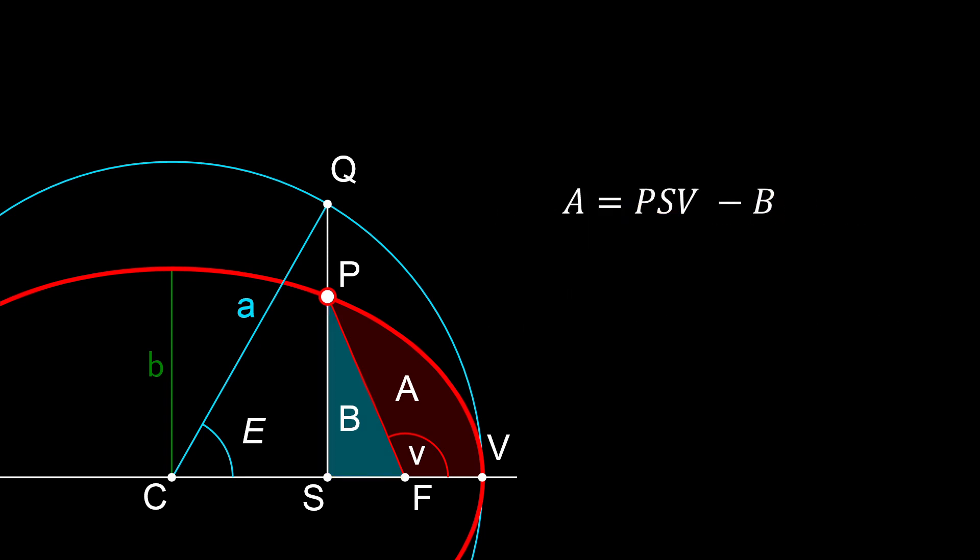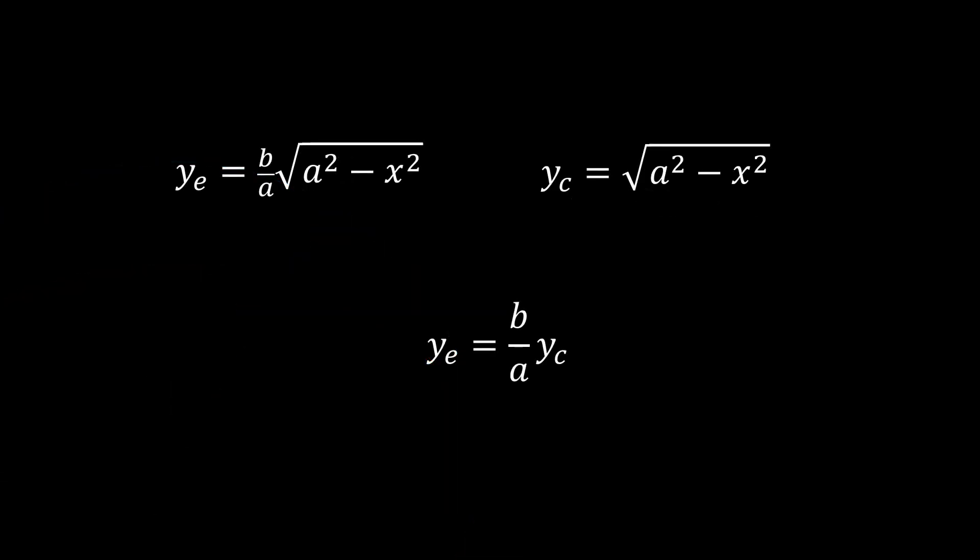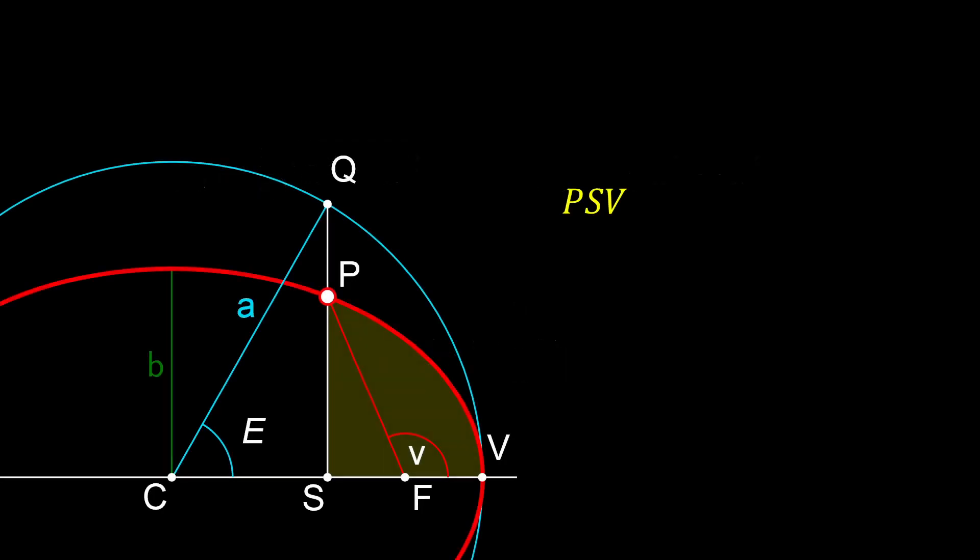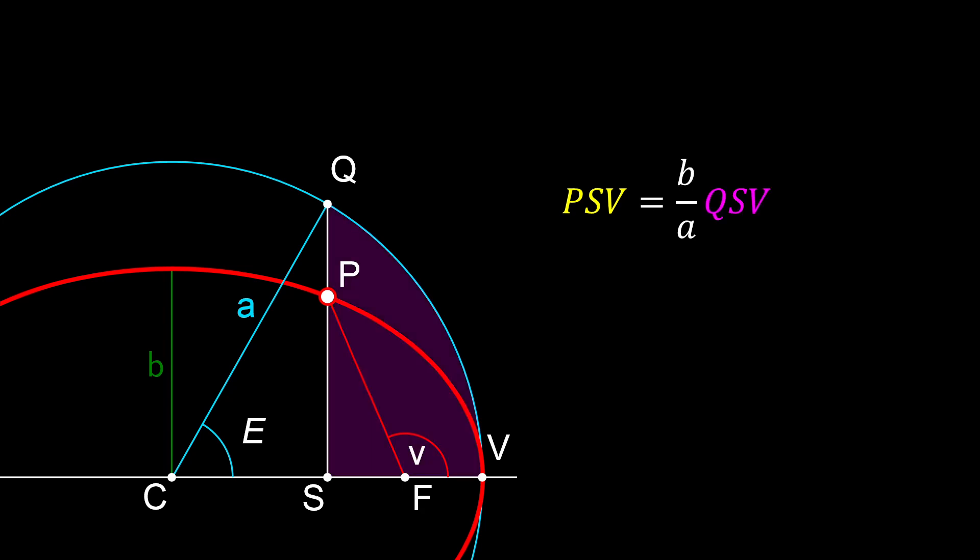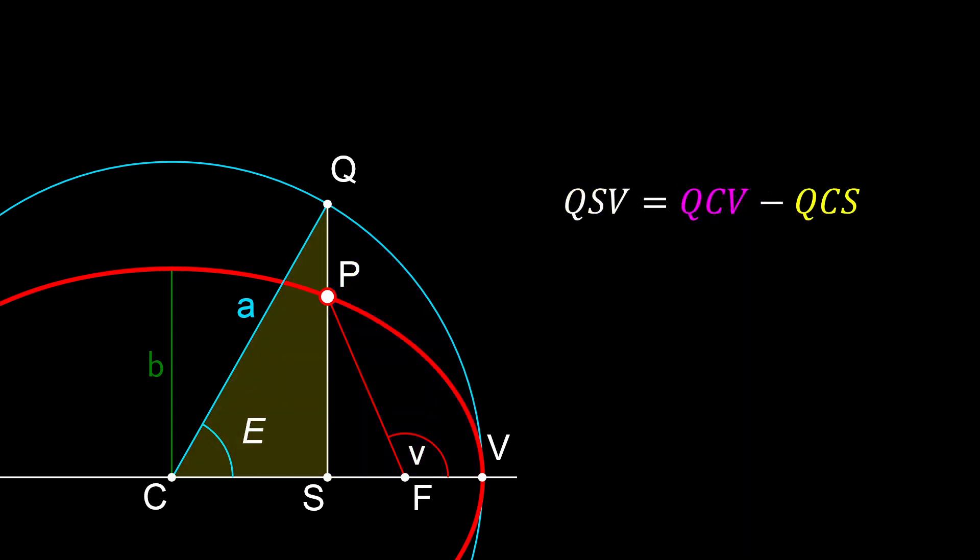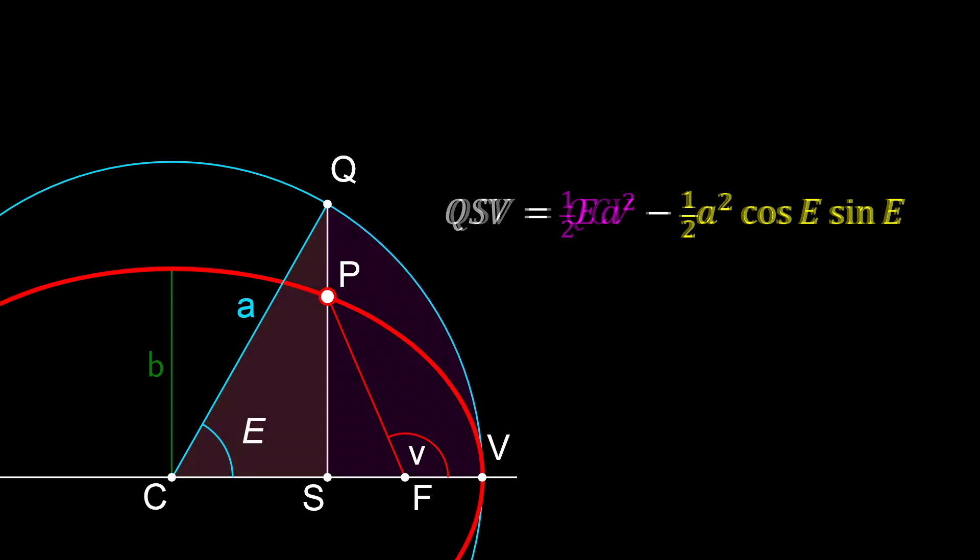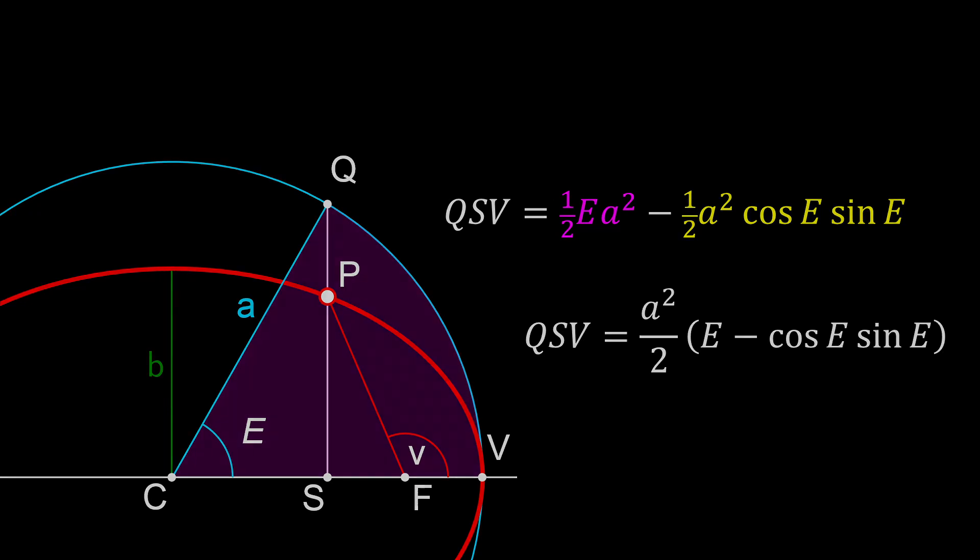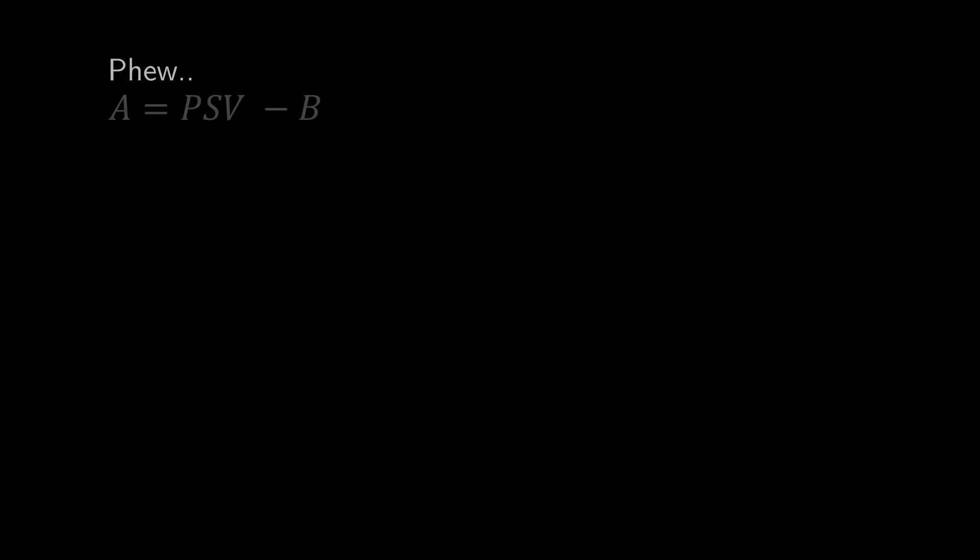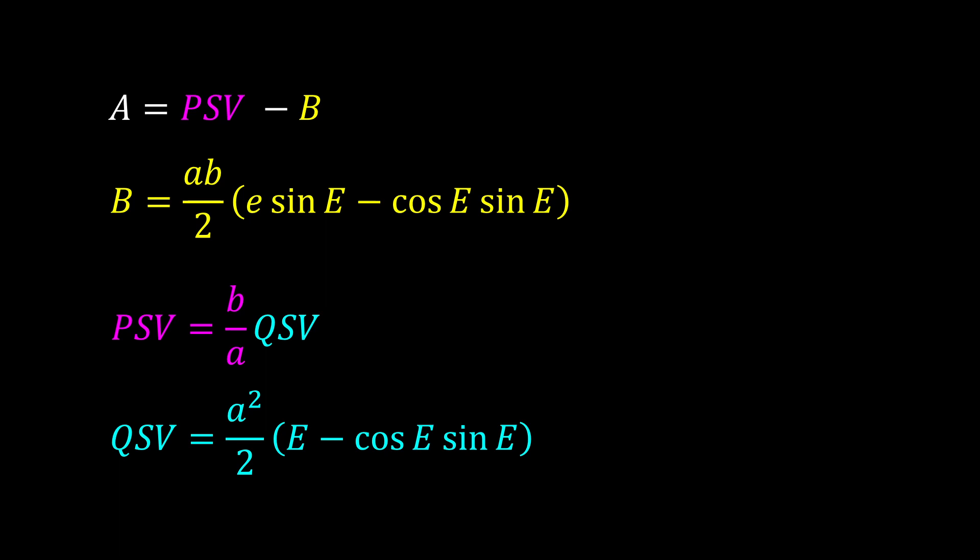So that's b, now for psv. It actually follows from the b over a relationship of the y coordinates of an ellipse to the auxiliary circle, and the equation for the area of an ellipse π times a times b, that psv is simply b over a times qsv. Okay, now qsv is the area qcv minus triangle qcs, with qcs simply being the right triangle area of one half of a cosine of the eccentric anomaly times a times the sine of the eccentric anomaly, and qcv being the eccentric anomaly divided by 2 times a squared, provided the eccentric anomaly is in radians. So qsv can be expressed as follows. Taking a step way back, a is psv minus b, we know b, we know qsv, so we know psv, meaning we can express a as the following.